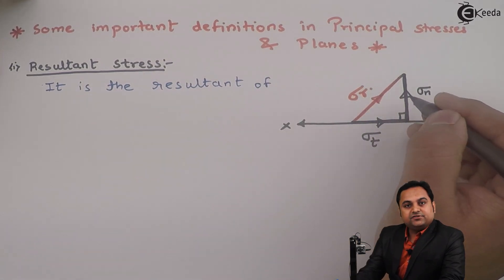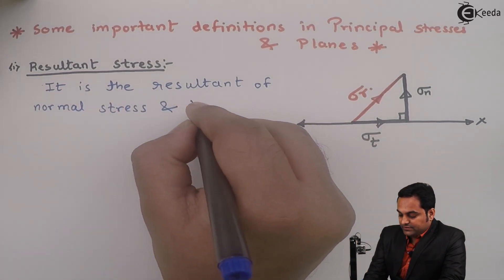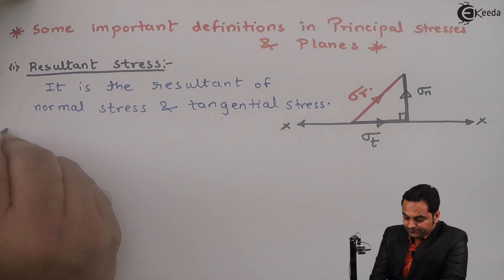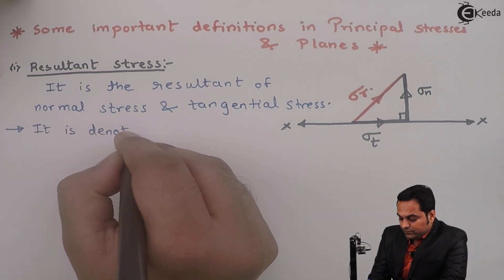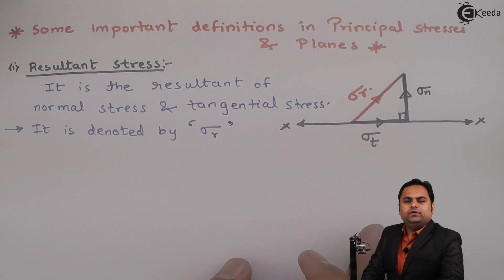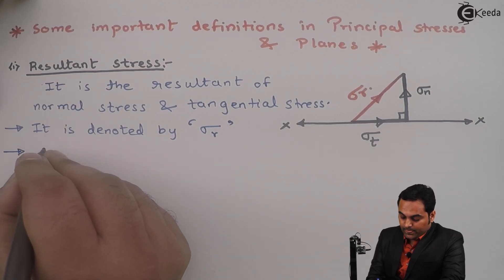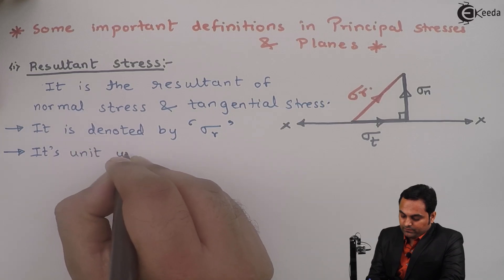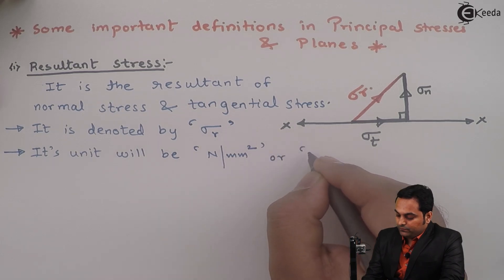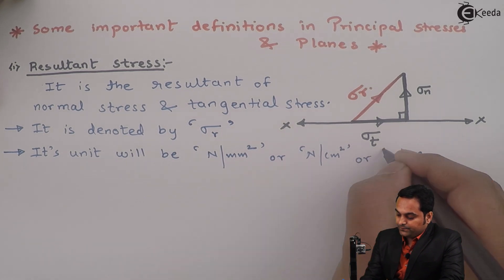So resultant stress is the resultant of normal stress Sigma N and tangential stress Sigma T. It is denoted by Sigma suffix R. Since it is a stress, the unit will be Newton per mm², Newton per cm², or Newton per m².